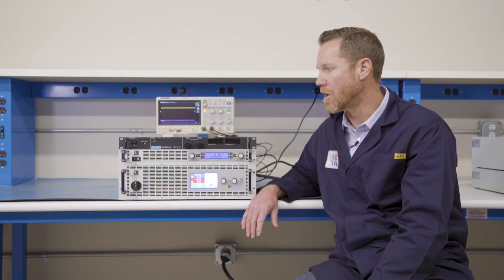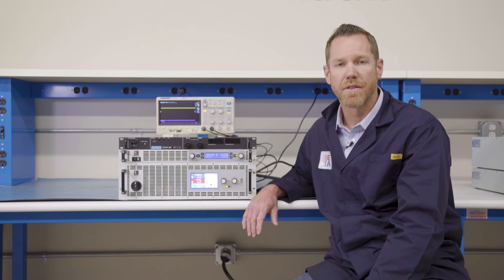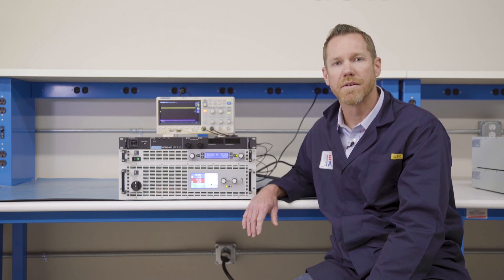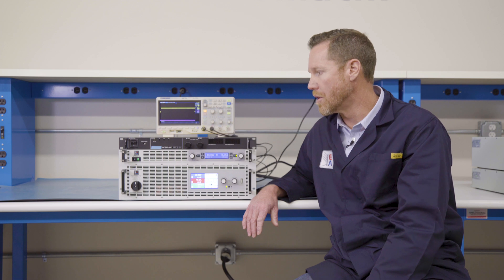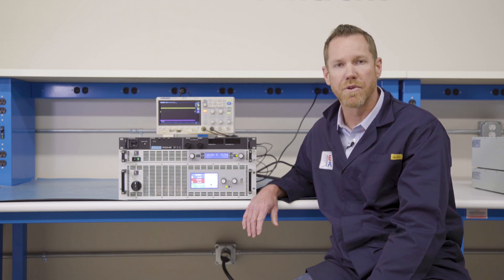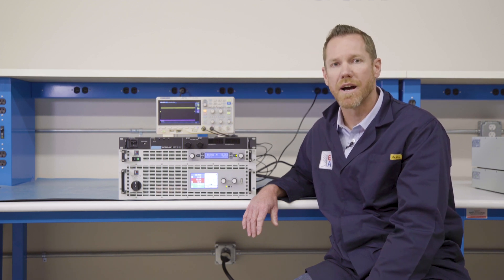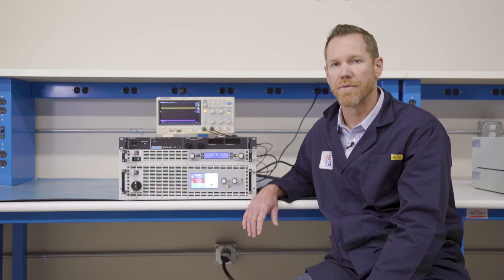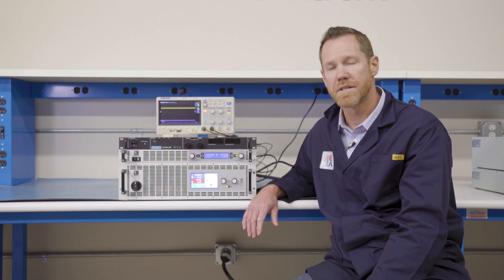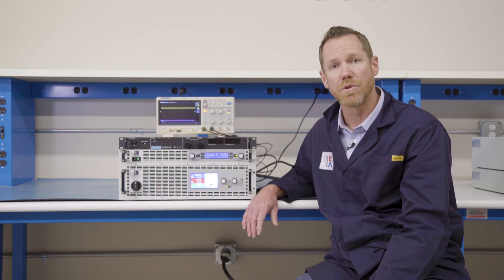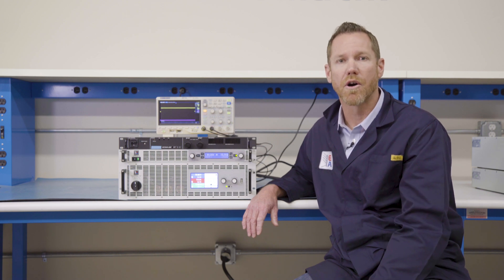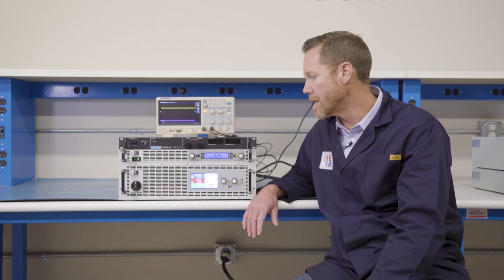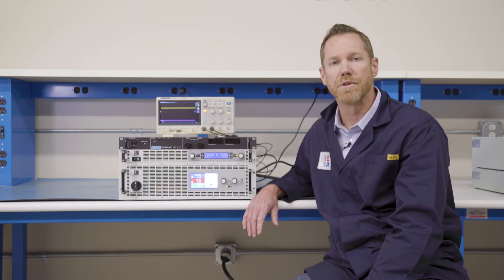So some of the benefits that come along with that is one, of course, that you can get more current out of a similarly powered unit, but also, too, it allows you to plan for the future. So maybe your application now only requires 28 volts, so you get a 40 volt power supply. But what this does allow is that, hey, why not go to 80 volts and still be able to hit the cardinal current points that you're looking at and be able to plan a little bit for the future.